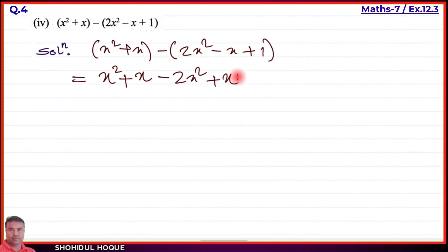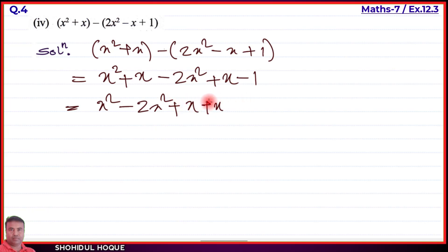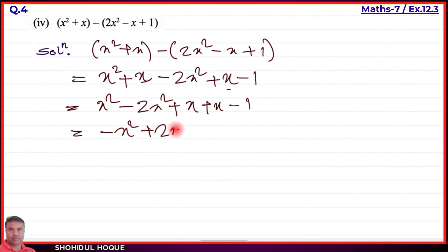After removing brackets: x square plus x minus 2x square plus x minus 1. Combining like terms: x square like terms give x square minus 2x square equals minus x square. Then x plus x equals 2x. Constant is minus 1. So simplified answer is minus x square plus 2x minus 1.